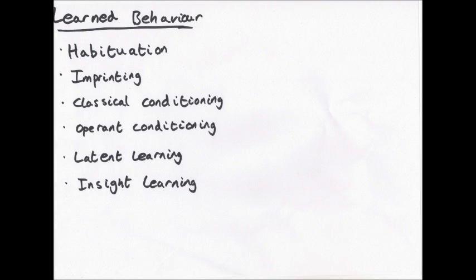Imprinting involves young animals becoming associated with another organism, usually the parent. The next three—imprinting, classical conditioning, and operant conditioning—have very famous examples. The first is Konrad Lorenz.